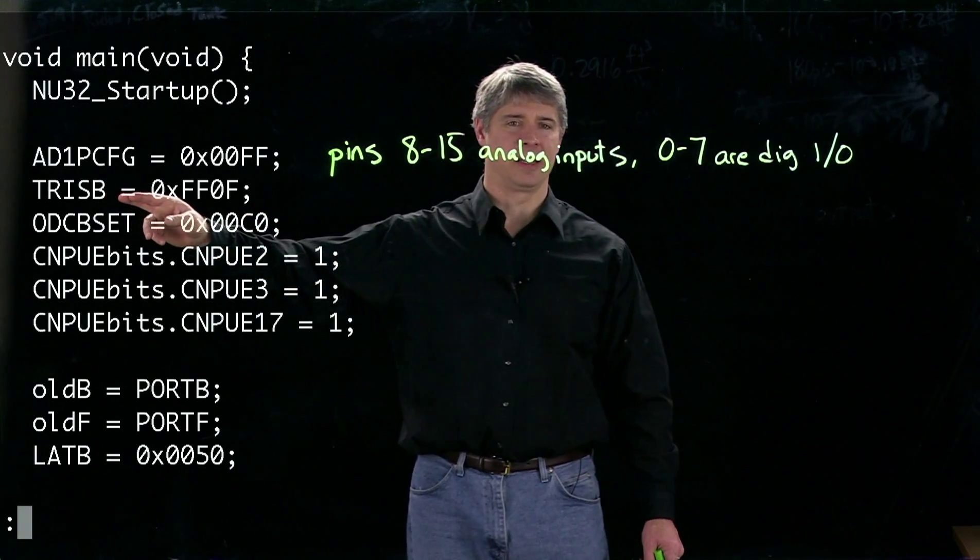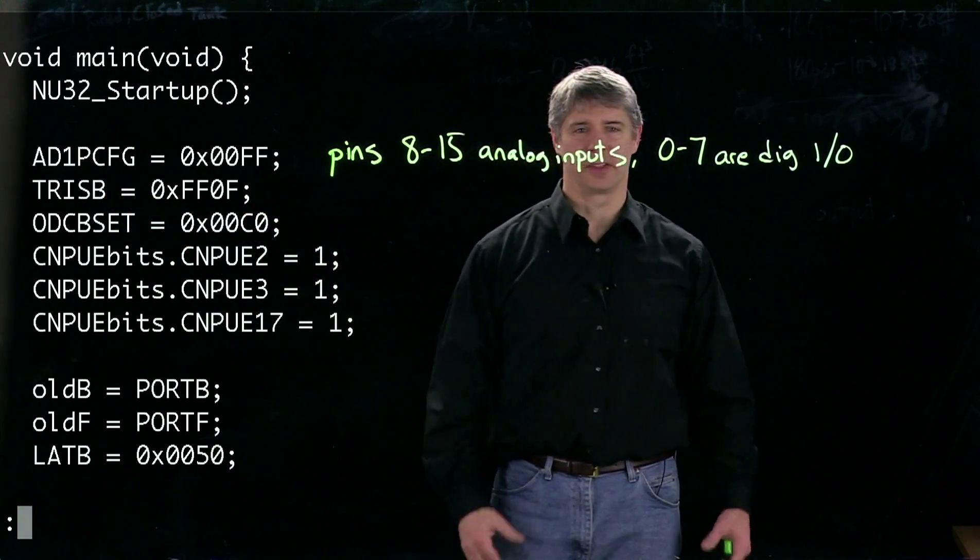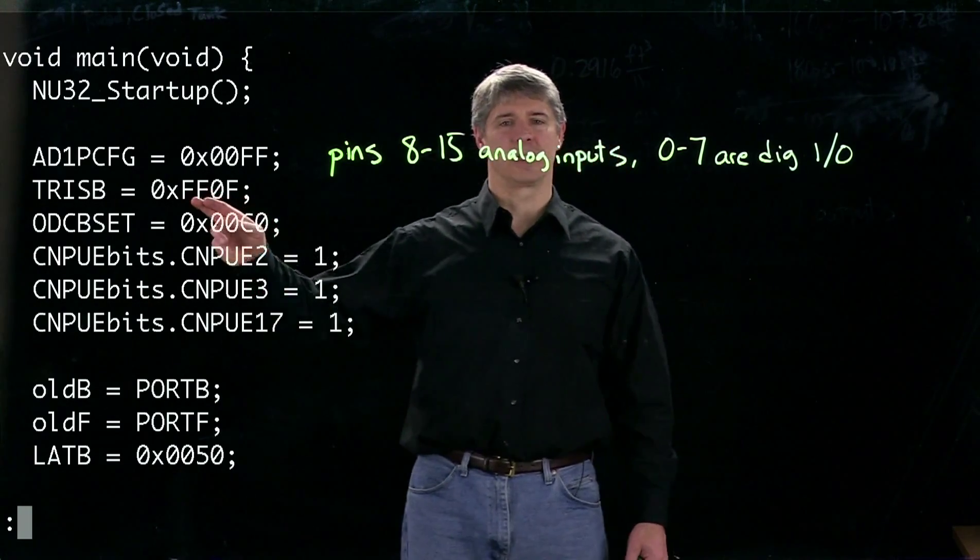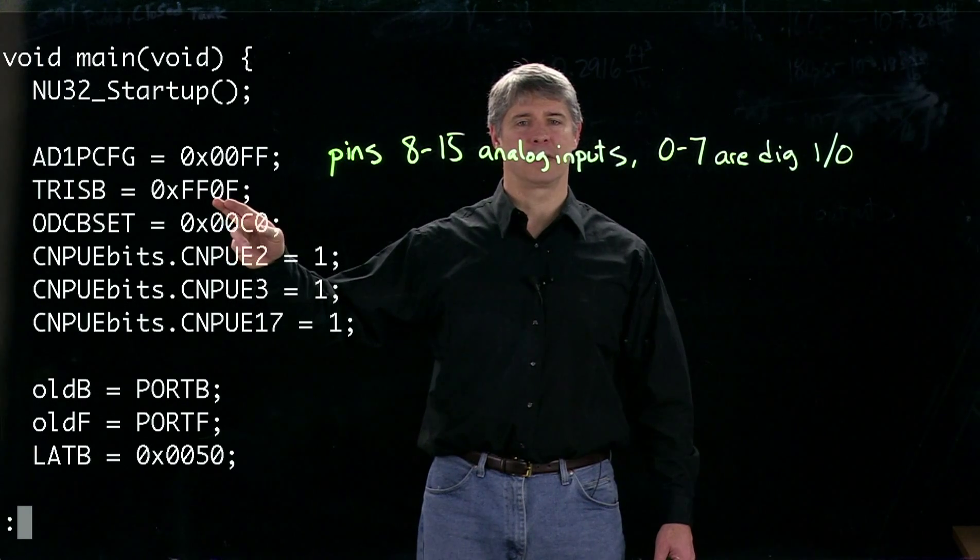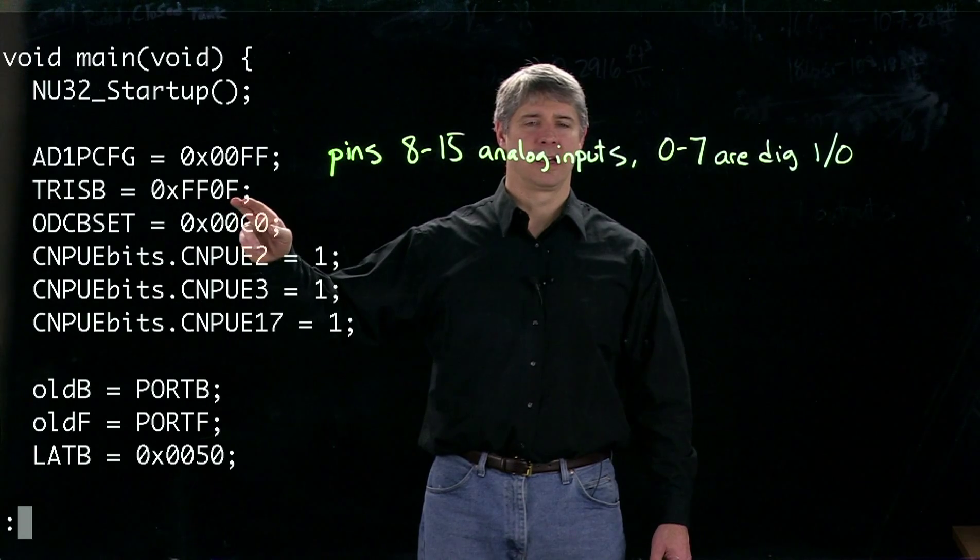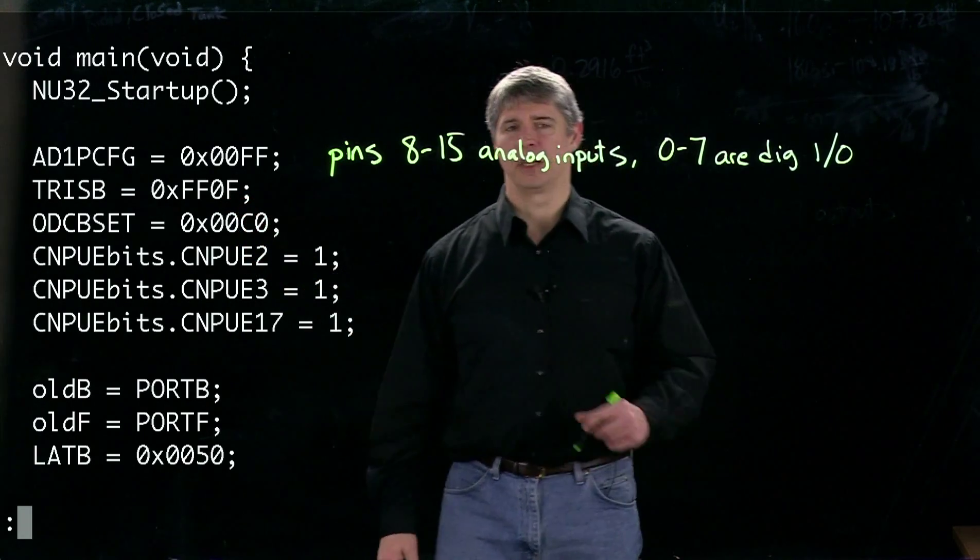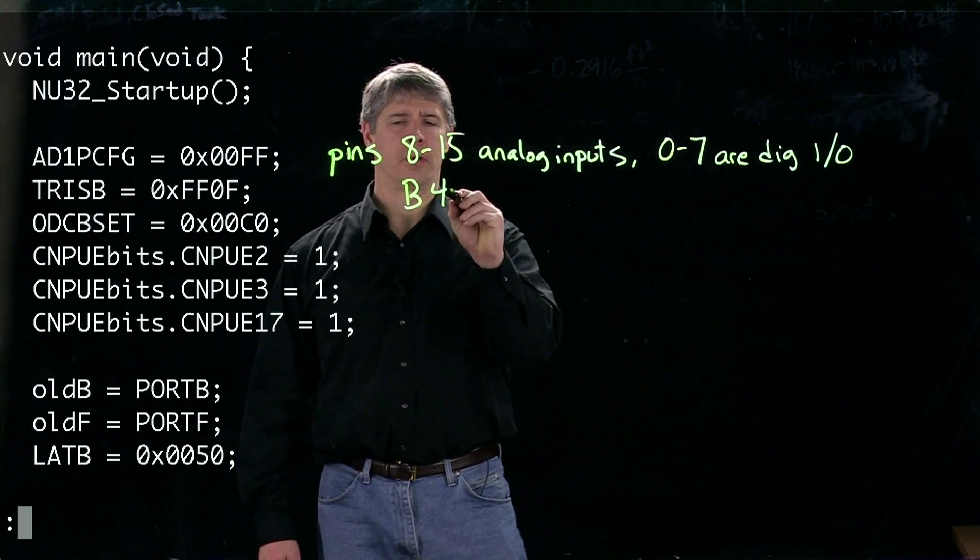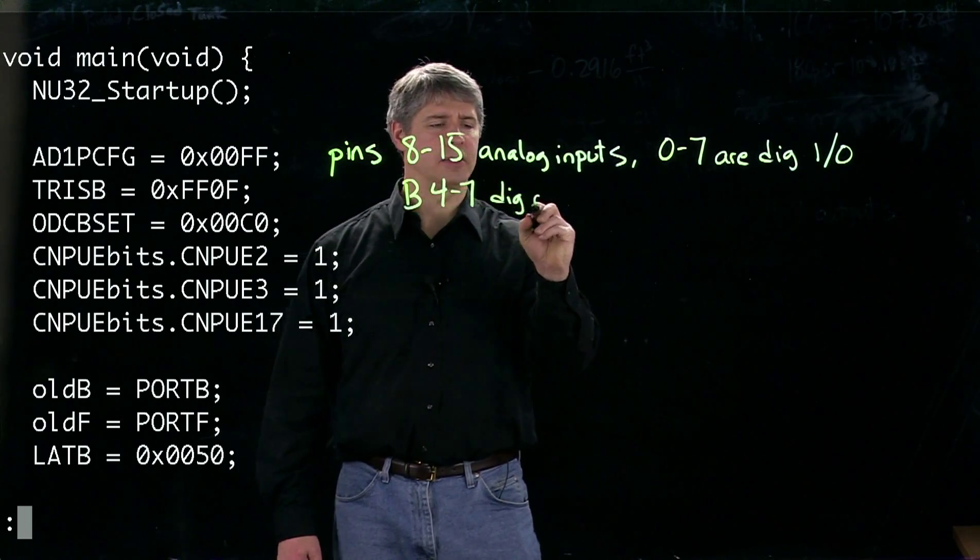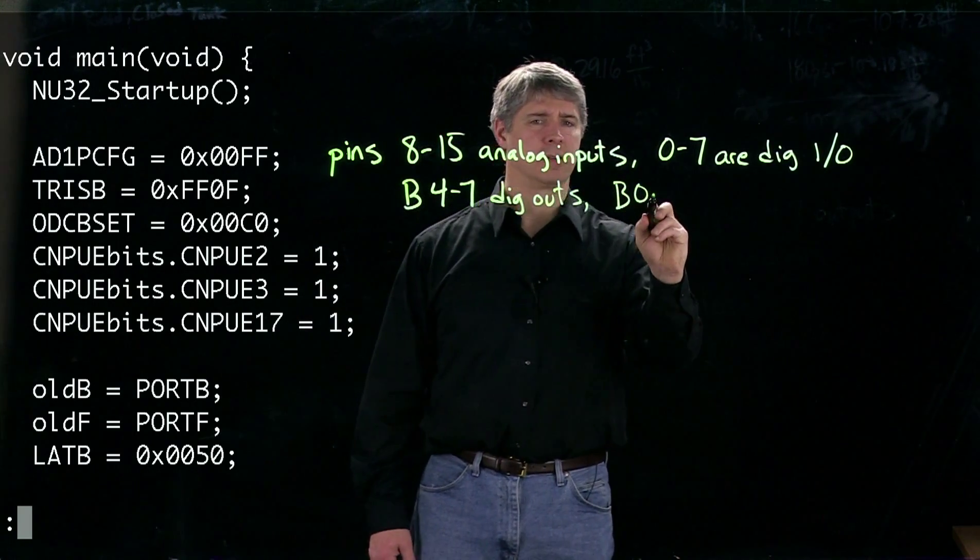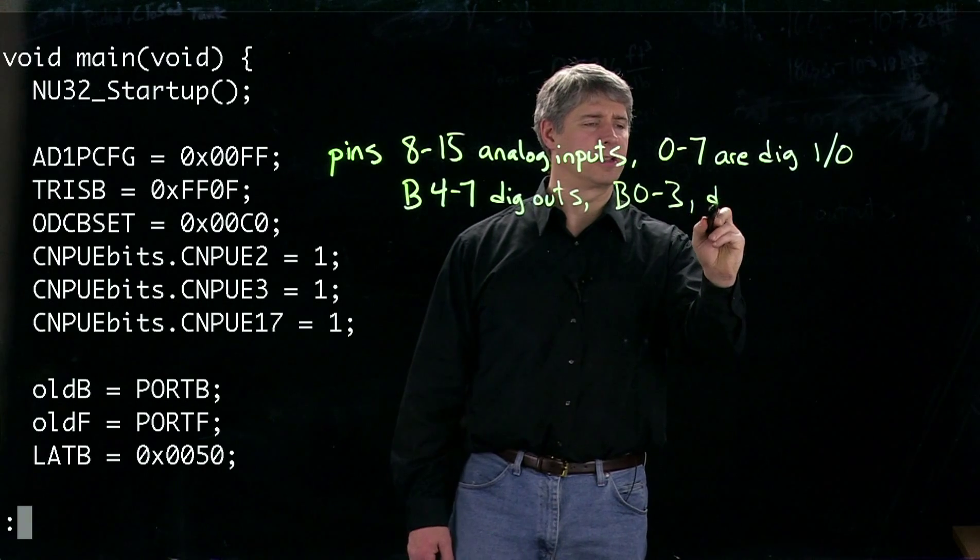In this next command, TRISB, you can ignore the top 8 bits because those correspond to the analog inputs. The tri-state special function register chooses which digital pins are inputs or outputs. According to this, pins 4 to 7 are configured as outputs, and pins 0 to 3 are configured as inputs.